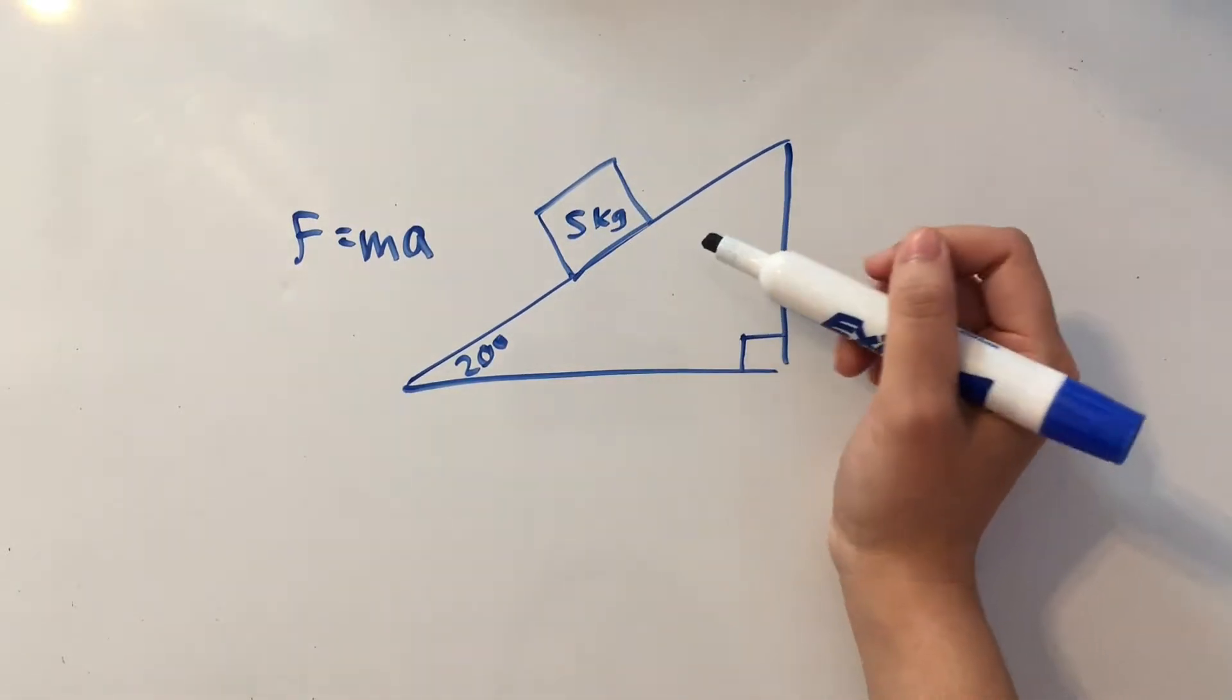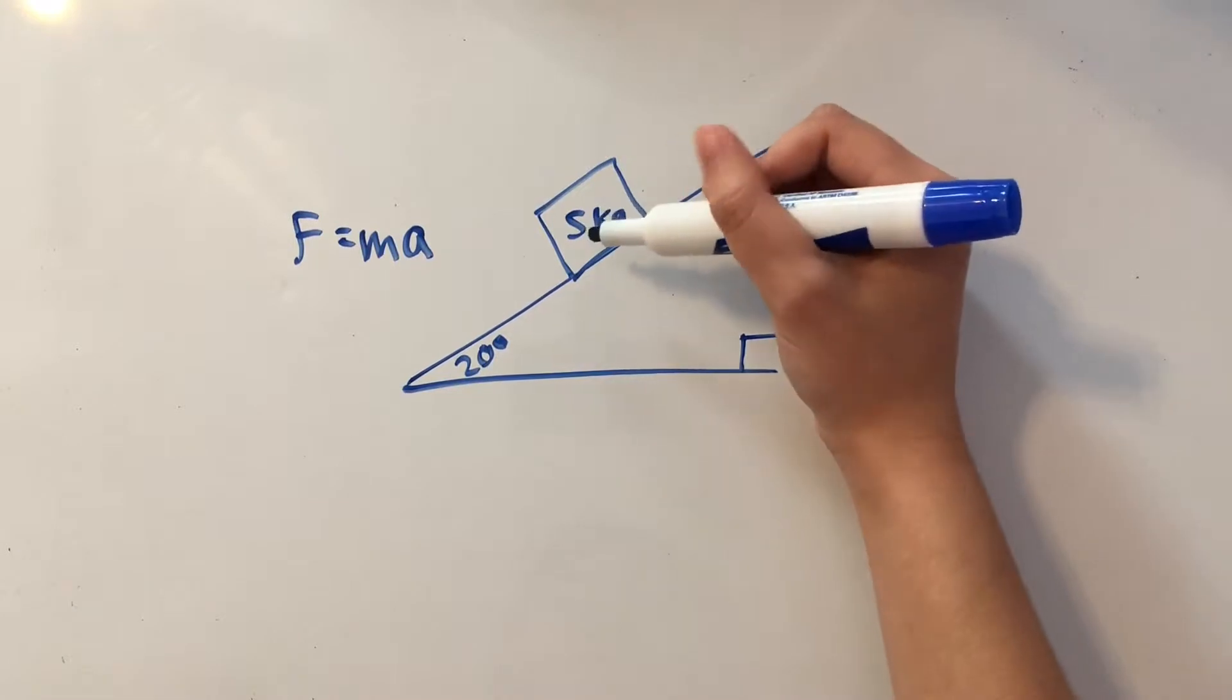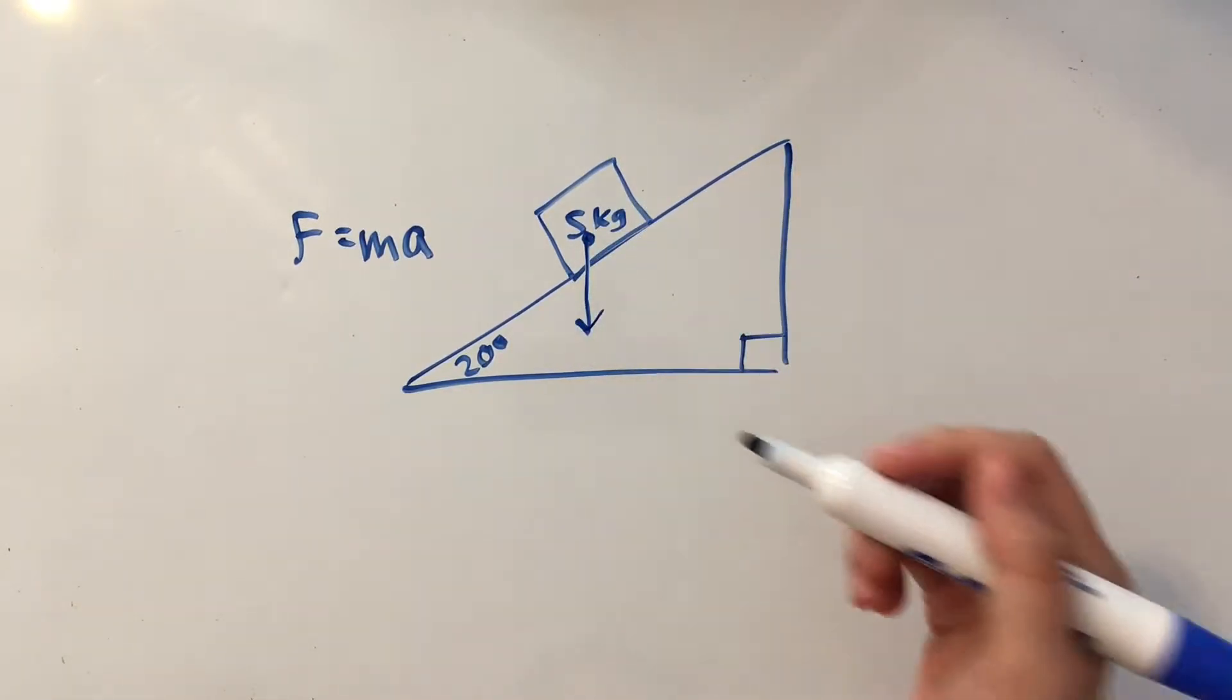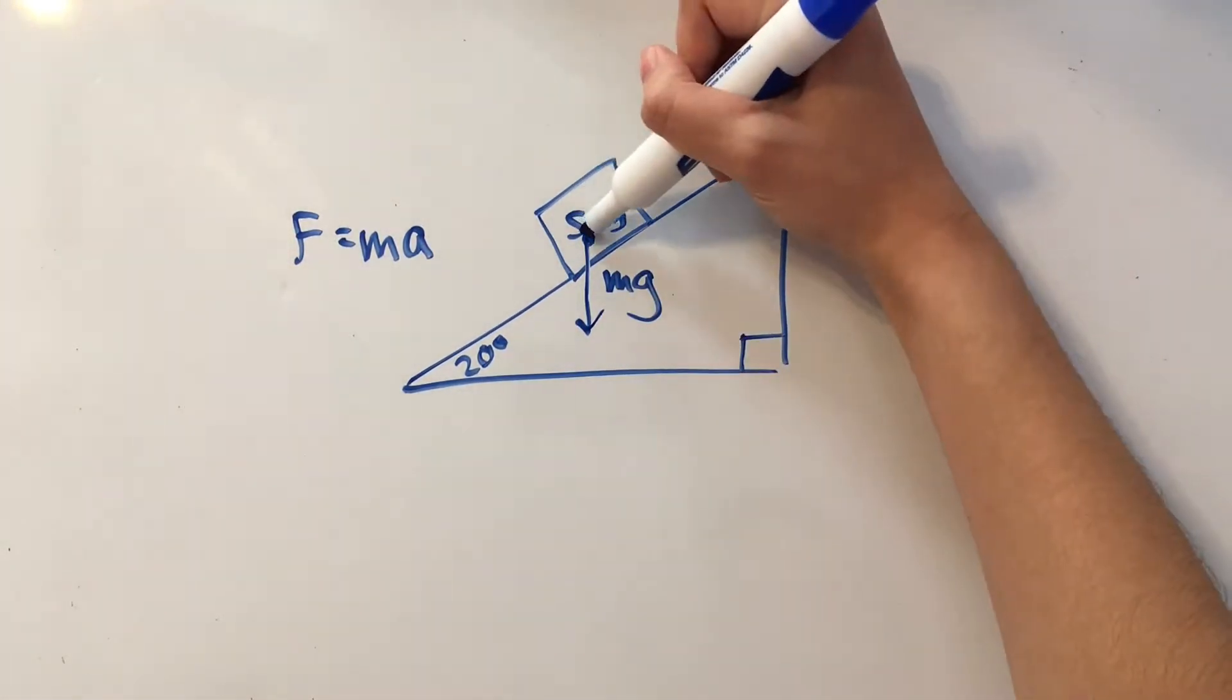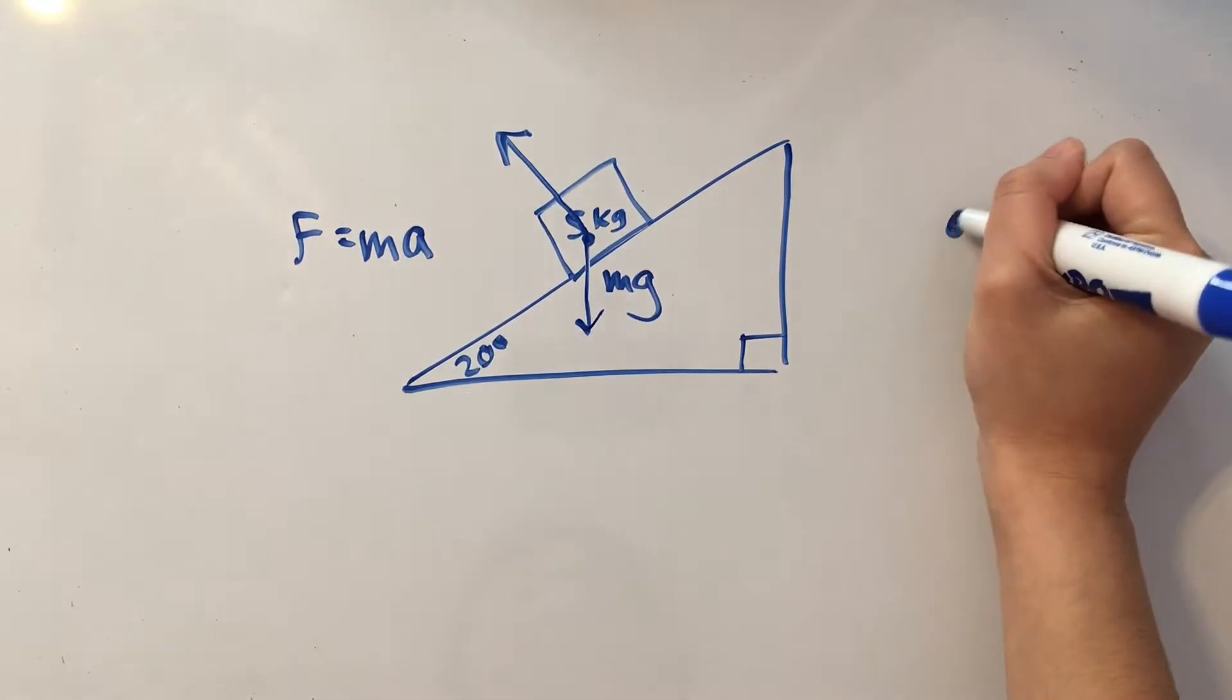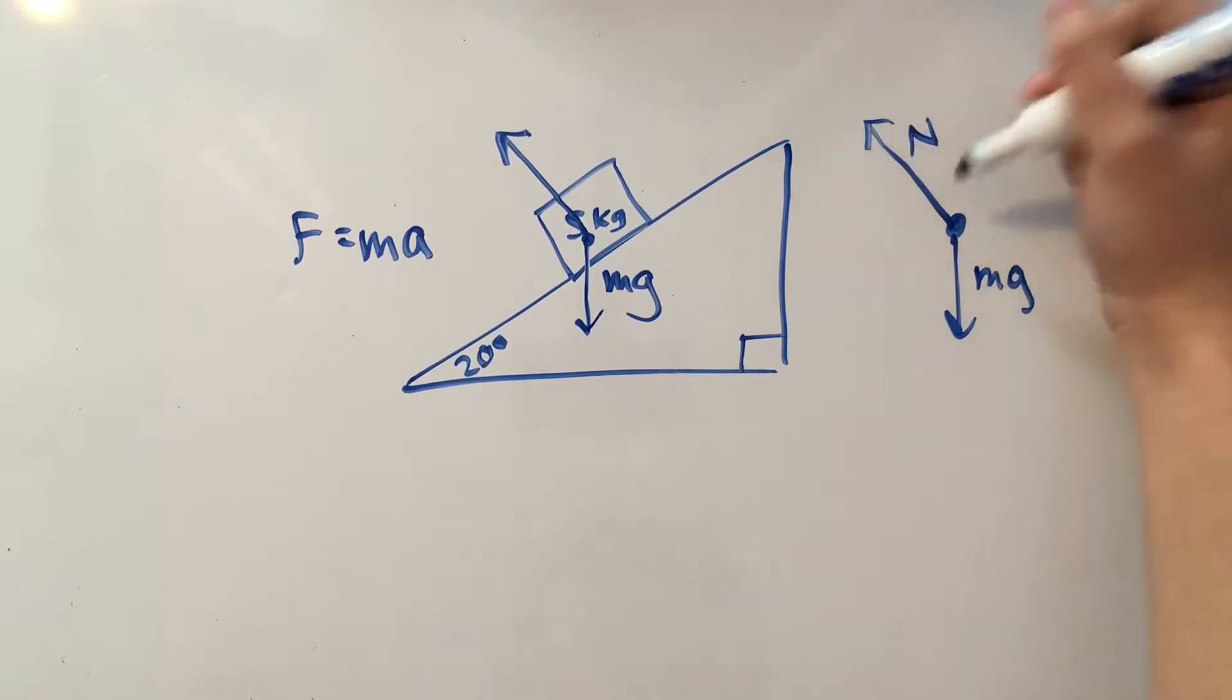First let's draw in the forces that are going to be exerted on this 5 kilogram block of ice. First of all we have our downward pull of the earth, which is always going to be mass times gravity, and then we have the normal force that the inclined plane is going to be exerting on the block of ice. So our force diagram is basically going to look kind of like this, and this one's the normal force.